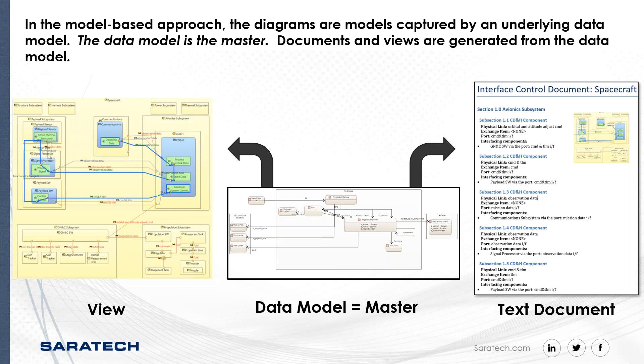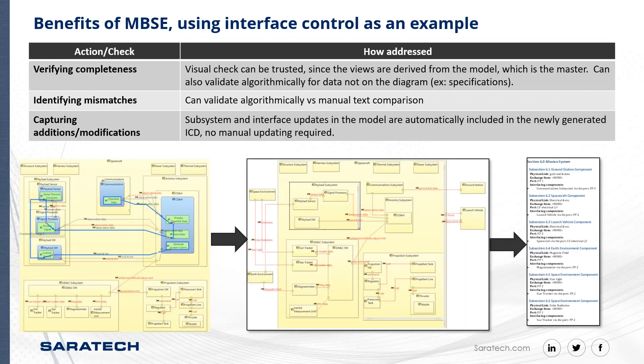Now instead of the text document being the master, you do everything with your model and then generate the formats and views you need. The benefits of MBSE — using the interface control document as an example — imagine the difference when you're trying to verify completeness. When it's visual, you can look and see, 'hey, we missed an interface between the propulsion system and the avionics subsystem.' Imagine trying to do that with a text document.